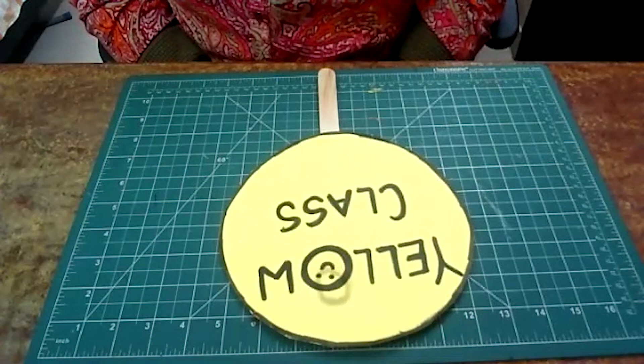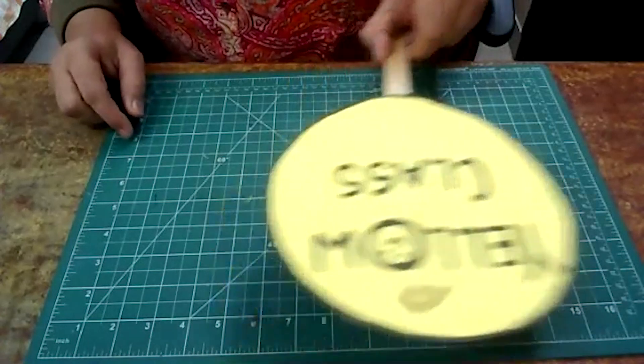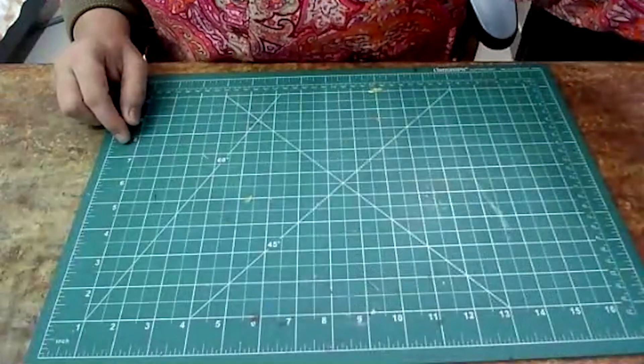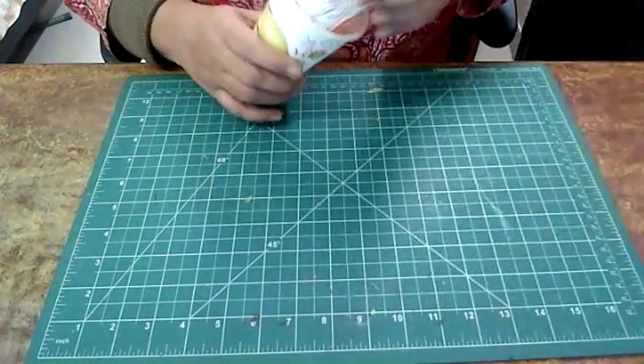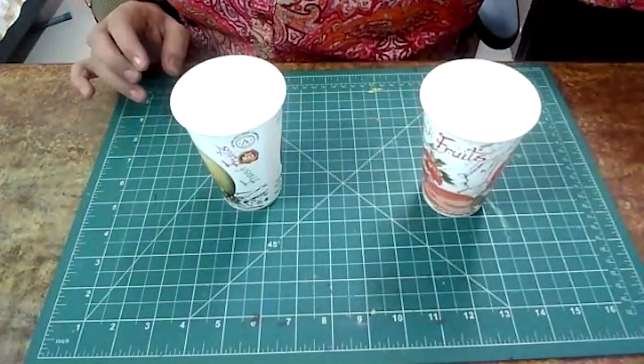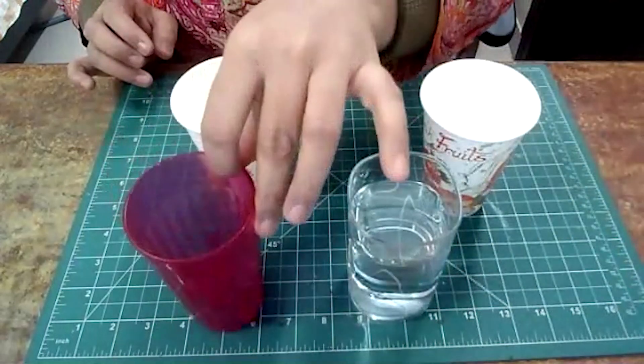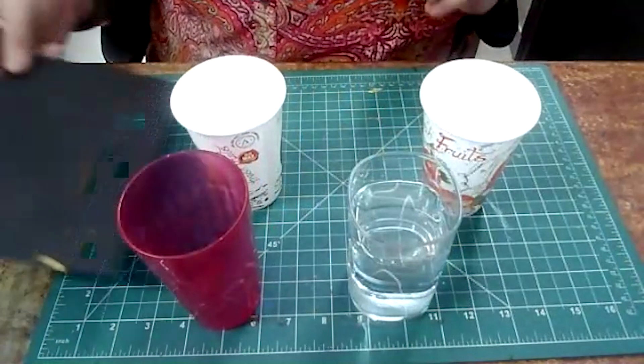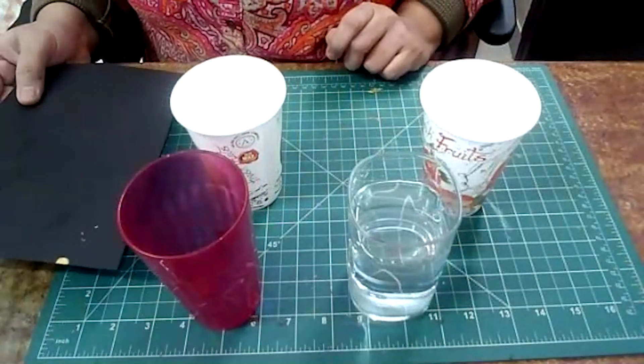So you love doing science experiments. Perfect! What we need today is two disposable glasses, one glass of water, and one empty tumbler and a thick sheet. I have taken an A4 size sheet which is quite a thick sheet and we will use this.